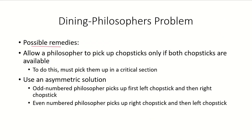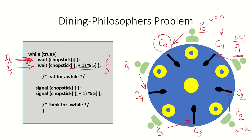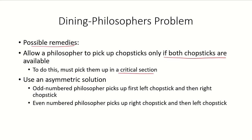What are the possible remedies? One solution is to allow a philosopher to pick up chopsticks only if both chopsticks are available. That means p0 can pick up chopsticks only if c0 and c1 are both available. Since the process was preempted, another philosopher got hold of the other chopstick, so the two instructions for acquiring the resources should be placed inside the critical section only.